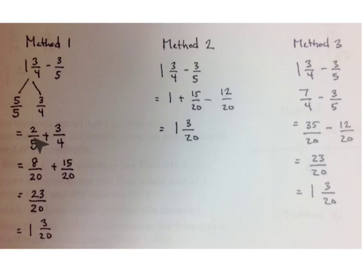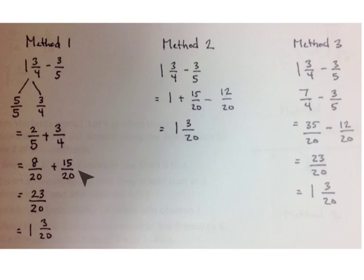Now we're going to add 2 fifths to 3 fourths because we've already subtracted our 3 fifths. Getting a common unit of 20: 2 fifths times 4 over 4 gives us 8 twentieths, and 3 fourths times 5 over 5 gives us 15 twentieths. 8 plus 15 is 23 twentieths, which is 20 twentieths — that's 1 — plus 3 more twentieths: 1 and 3 twentieths.